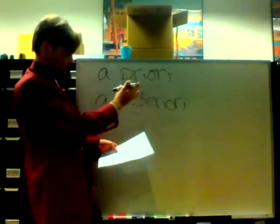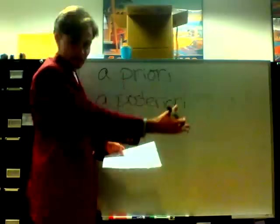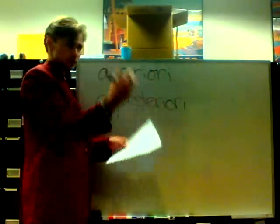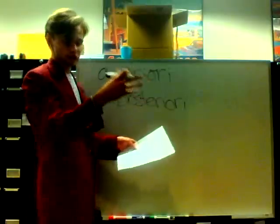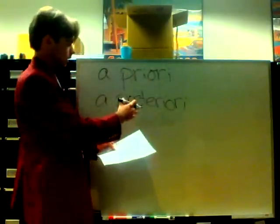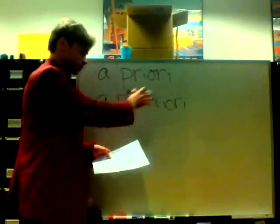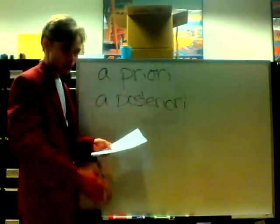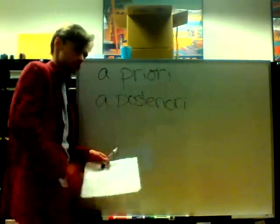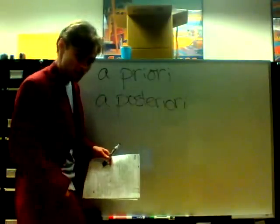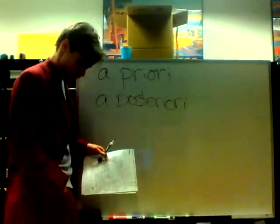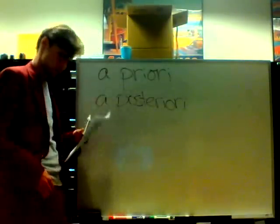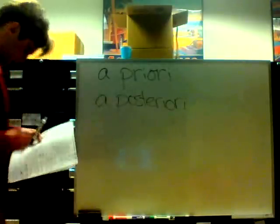A posteriori is the opposite — it's dependent on the senses. For example, a priori would be something like 2 plus 2 equals 4. A posteriori, for example, would be: is there money in my pocket? I need to check my pocket. No, there's no money in my pocket.